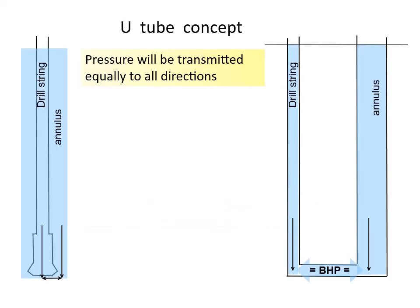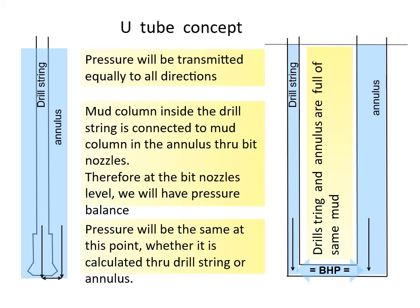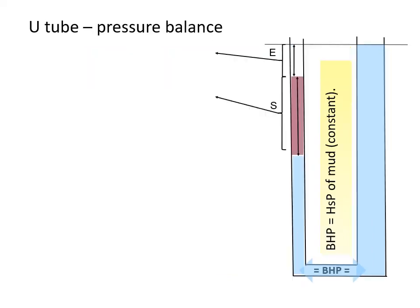Pressure will be transmitted equally to all directions. Mud column inside the drill string is connected to mud column in the annulus through bit nozzles. Therefore at the bit nozzles level, we will have pressure balance. In static conditions, pressure in the drill string will be transmitted into annulus and vice versa. Pressure will be the same at this point, whether it is calculated from the drill string or annulus. We can see application of U-tube and pressure balance principles in this slide.